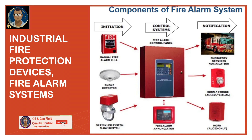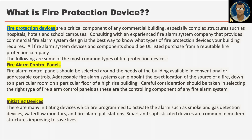What is a fire protection device? Fire protection devices are a critical component of any commercial building, especially complex structures such as hospitals, hotels and school campuses. Consulting with an experienced fire alarm system company is the best way to know what types of fire protection devices a building requires. All fire alarm system devices and components should be UL listed and purchased from a reputed fire protection company. Here are some common types of fire protection devices.